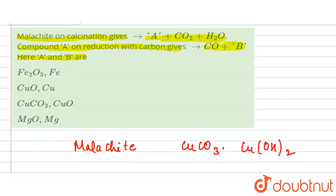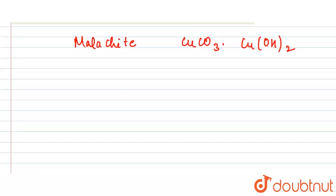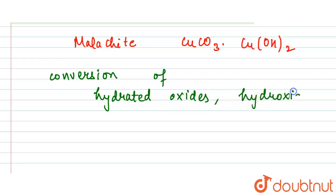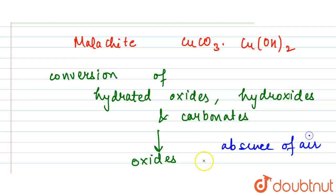First, we have calcination. In calcination, we have the conversion of hydrated oxides, hydroxides, and carbonates into the respective oxides in the absence of air or limited supply of air.